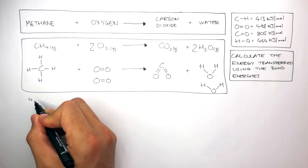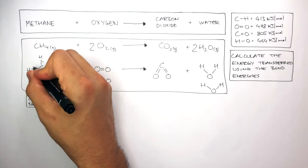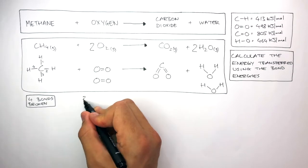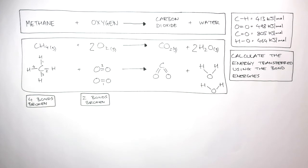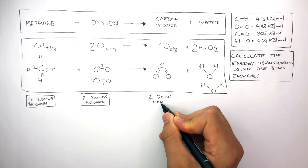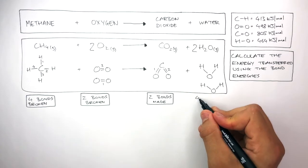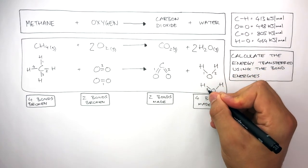There are four C-H bonds broken in methane — one, two, three, four. In the two oxygen molecules there are two double bonds broken — one and two. In the carbon dioxide molecule there are two C=O bonds made — one and two. And finally, in the two water molecules there are four H-O bonds made — one, two, three, and four.